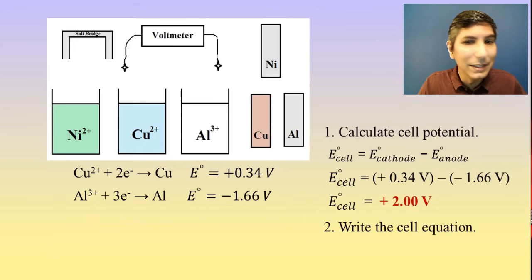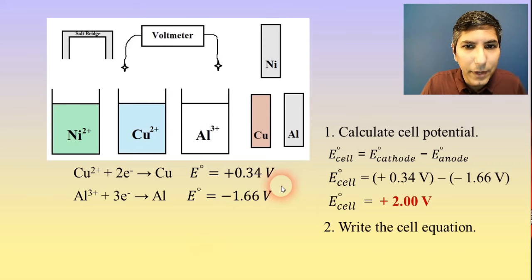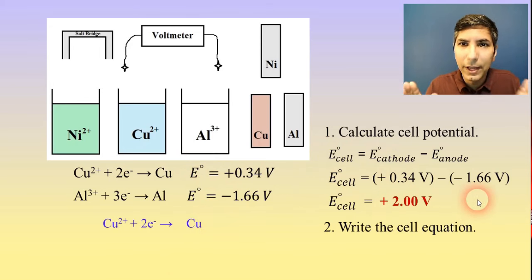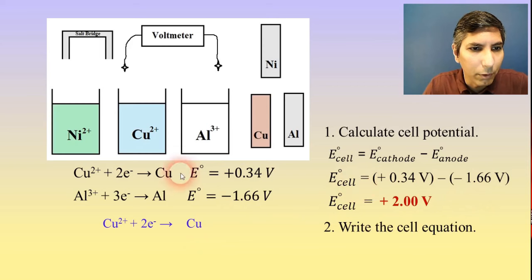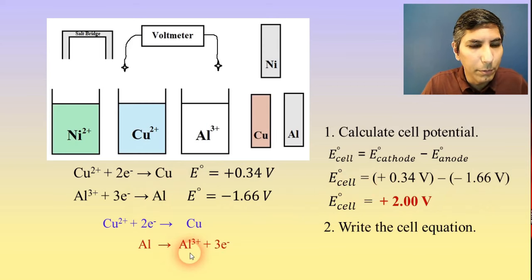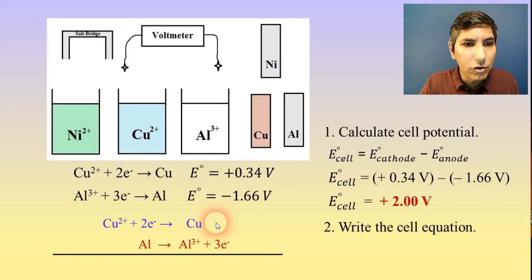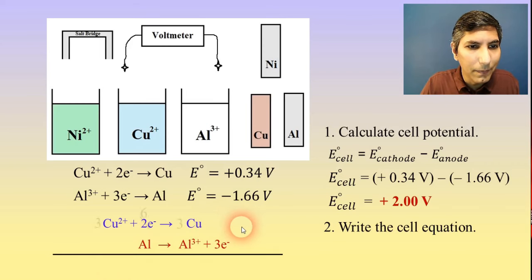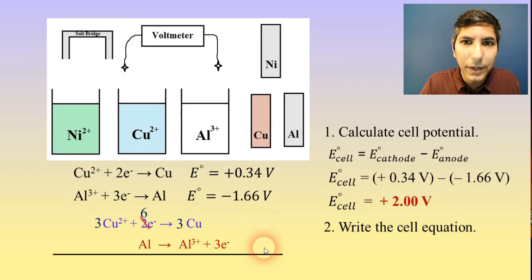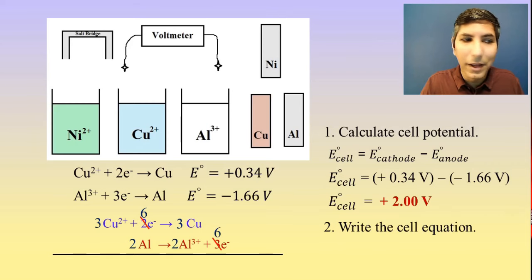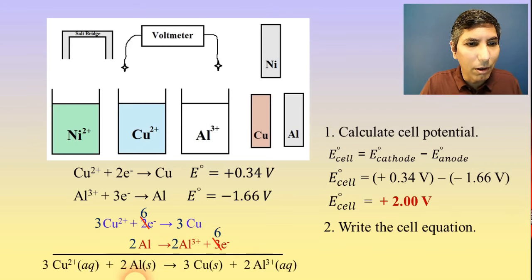The last thing we have to do is write the cell equation. The cathode — which is the copper — stays as is. The anode — that's the anti — is the one you have to flip, so we write: aluminum yields aluminum 3+ plus three electrons. When we add these together, the electrons do not cancel, so equation number one has to be multiplied by three and equation number two has to be multiplied by two. Now the six electrons cancel out when we add these together, and we get an overall balanced equation.